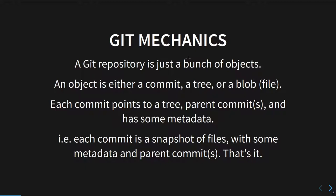An object is either a commit, a tree, or a blob. A tree is basically a list of blobs or trees, representing a directory. A blob just represents a file. A commit has a tree that represents the contents of the commit, and each commit has a parent commit plus some metadata — the time, the author, the committer, and the message.